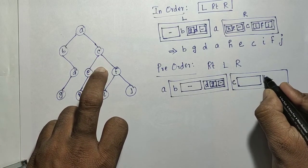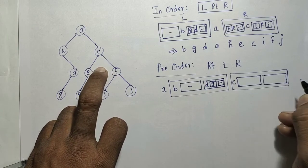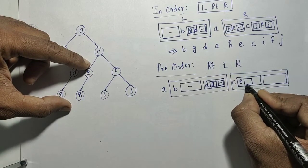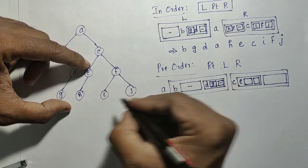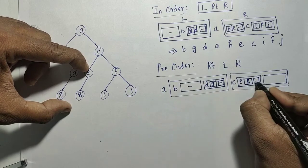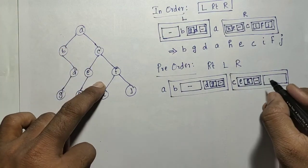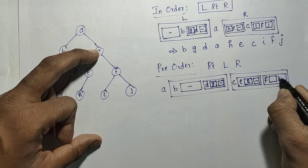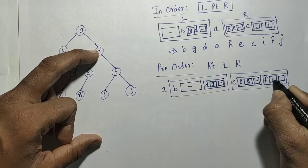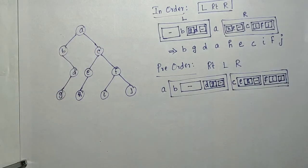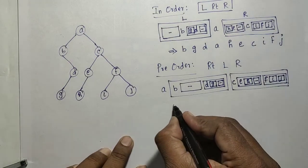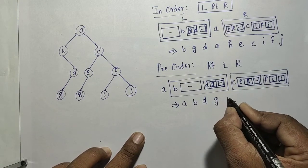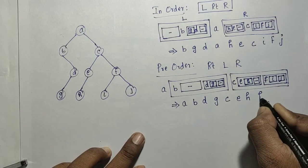Right of B is the subtree with D. D is the root — visited first. Then space for left and right of D. Left of D is G — single node, write it. Right of D is empty. Next go to right of A: C is the root, visited first. Then space for left and right of C. Come to left of C: E is root, visited first. Then space for left and right of E. Left of E is H, right of E is empty. Right of C: F is root. Left is I and right is J. So the pre-order traversal is: A, B, D, G, C, E, H, F, I, J.